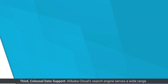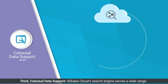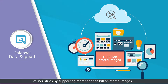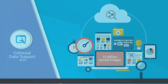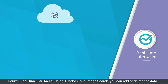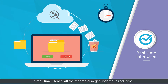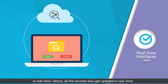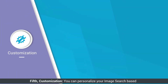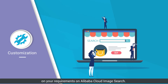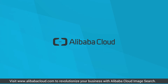Third, colossal data support — Alibaba Cloud's search engine serves a wide range of industries by supporting more than 10 billion stored images. Fourth, real-time interfaces — using Alibaba Cloud Image Search, you can add or delete data in real time, and all records get updated in real time. Fifth, customization — you can personalize your image search based on your requirements. Visit www.alibabacloud.com to revolutionize your business with Alibaba Cloud Image Search.